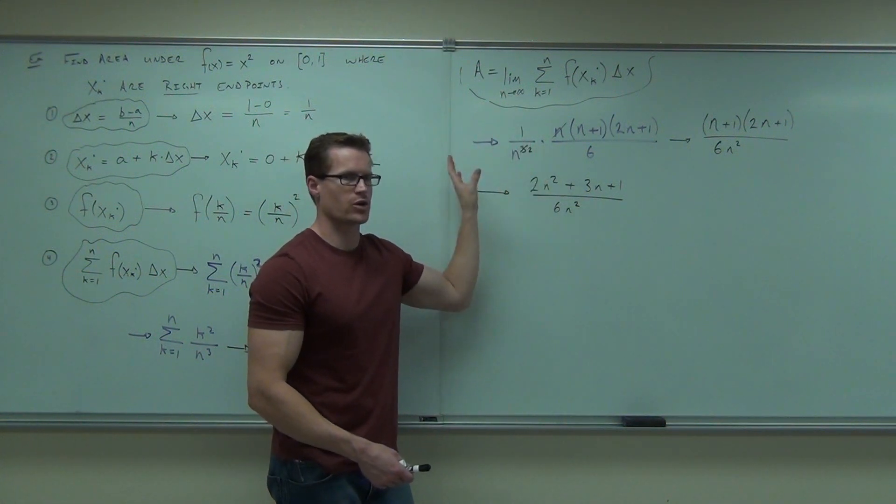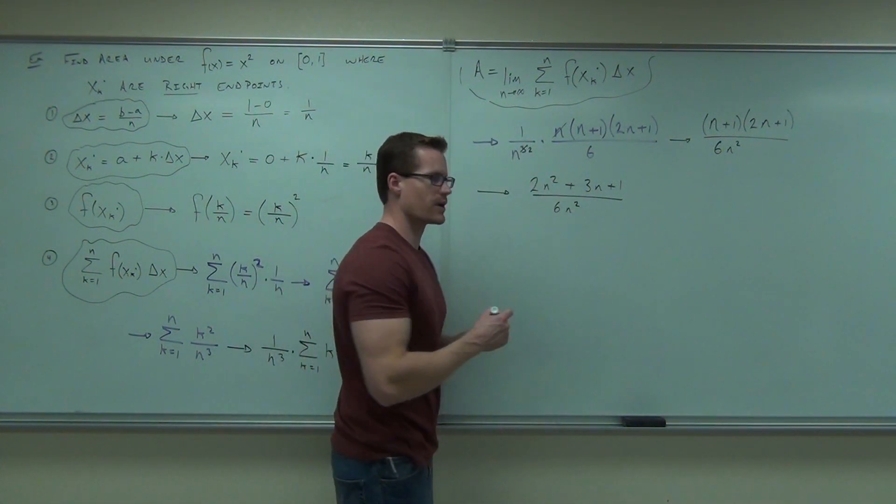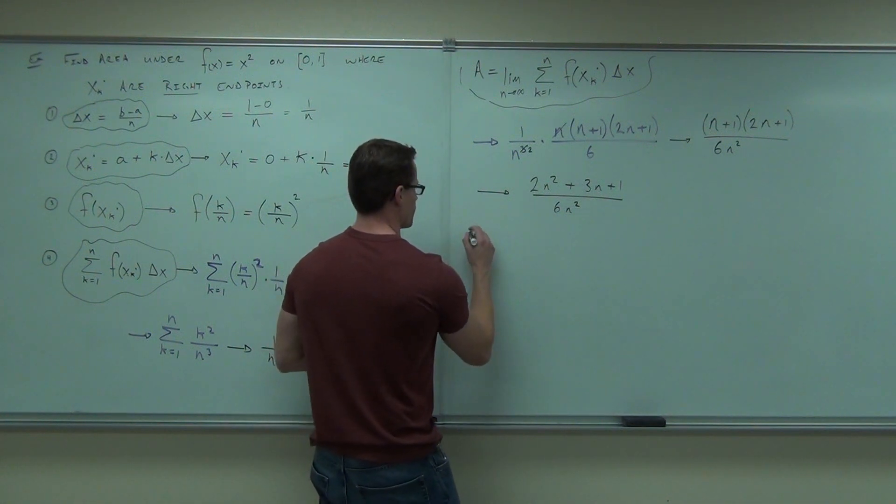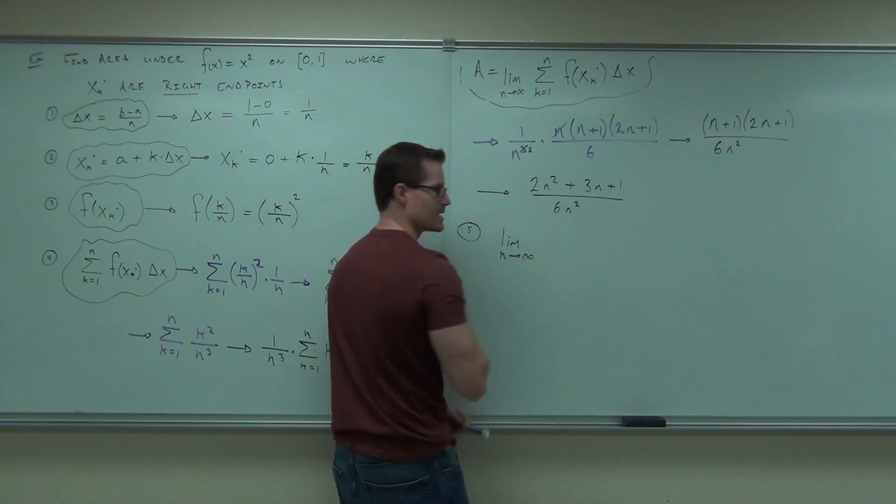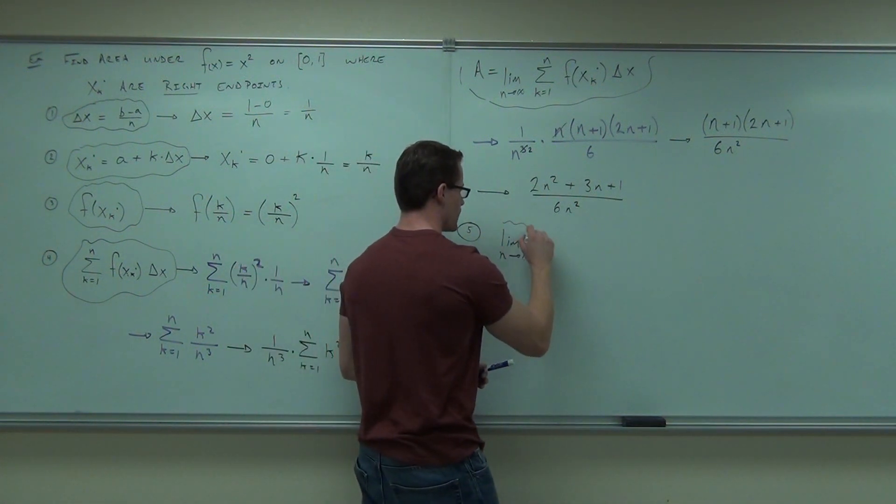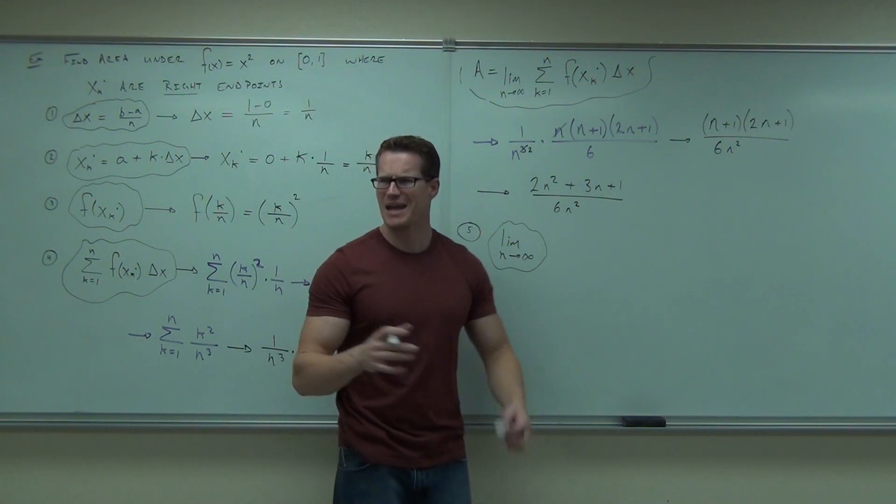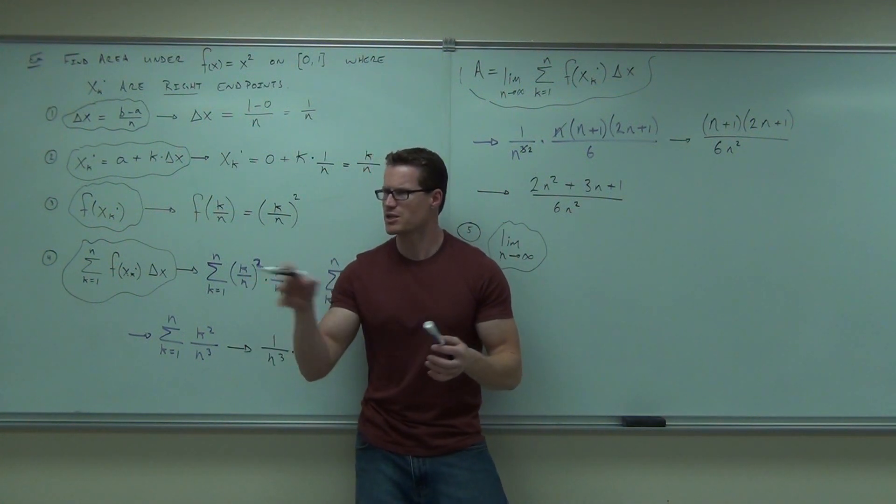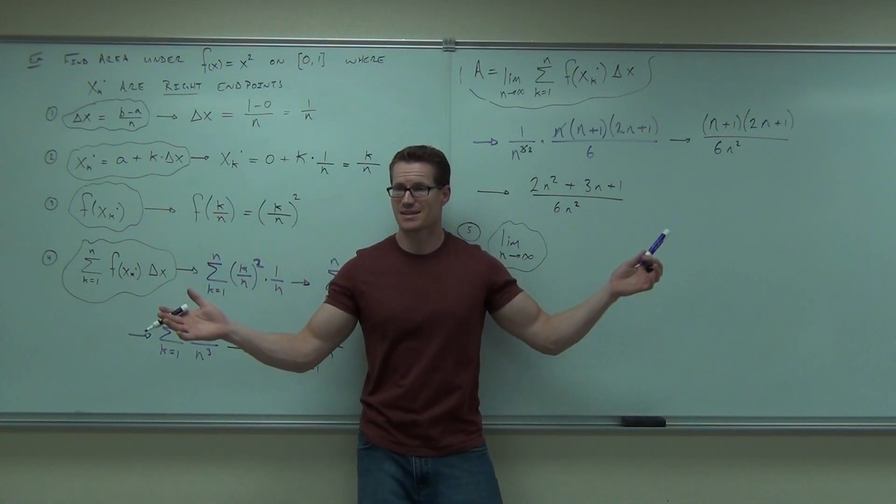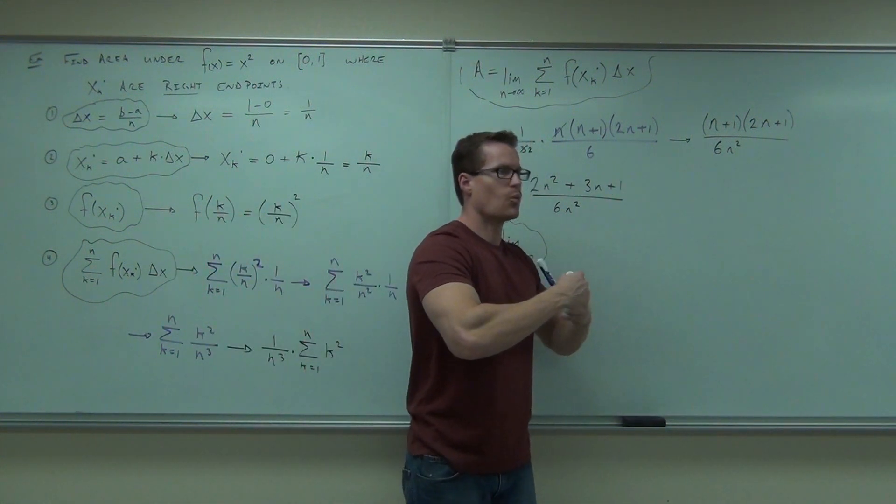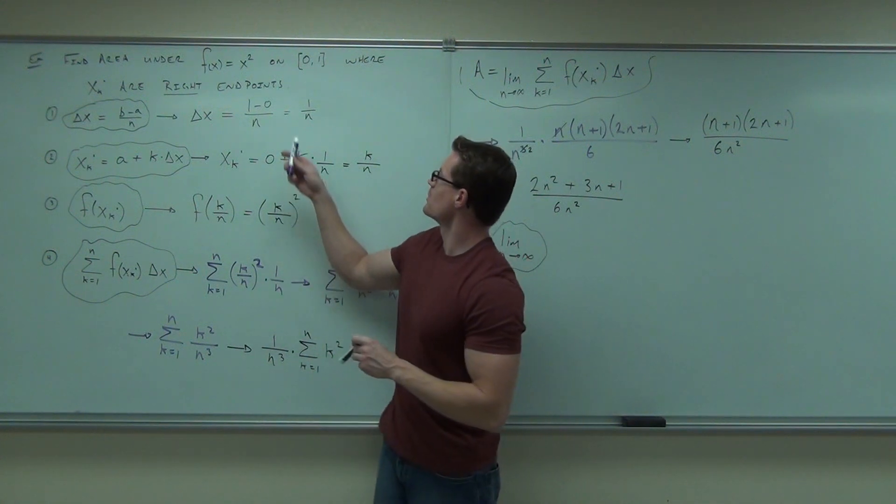So before you start writing an answer, we're not at the answer yet. Here's the fifth and final step. Take a limit as n goes to infinity. That's it. Notice the variable we ended with. That's kind of cool. We want n to go to infinity. What's the only variable we have? Fantastic. That's great. Why is that going to happen? Because you're actually going to numbers.